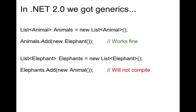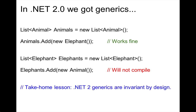In .NET 2.0 we got generics. In the first two lines we have a list of animals, and we add an elephant — that works just fine. In lines 3 and 4 we have a list of elephants, and then we try to add an animal to a list of elephants, and that won't compile. The take-home lesson here is that in .NET 2, generics are invariant by design, fixing the issue with covariant arrays from .NET 1.0.